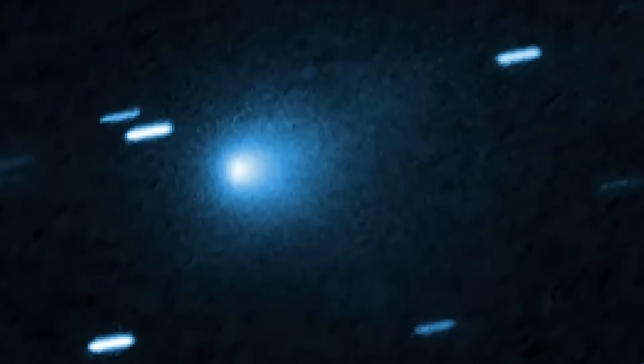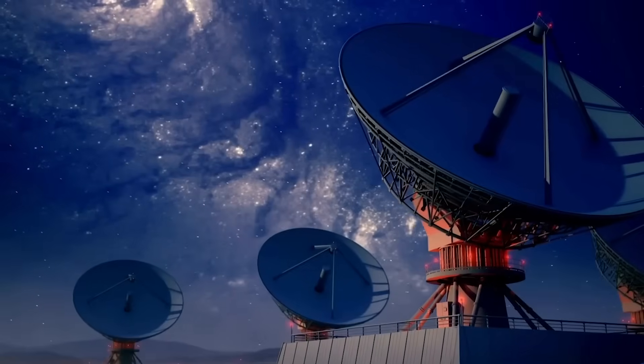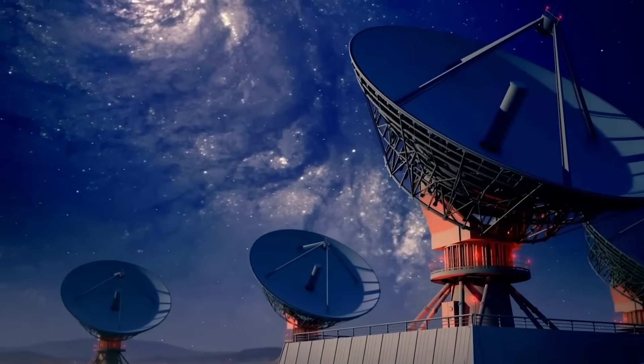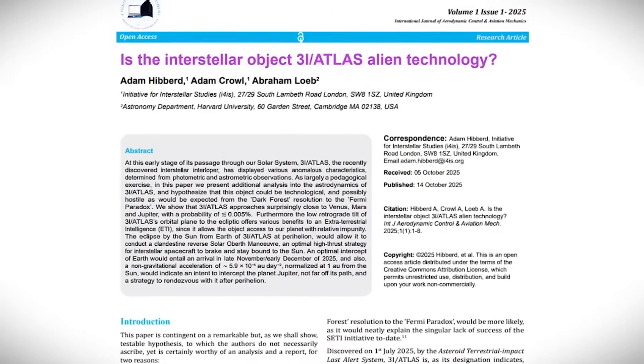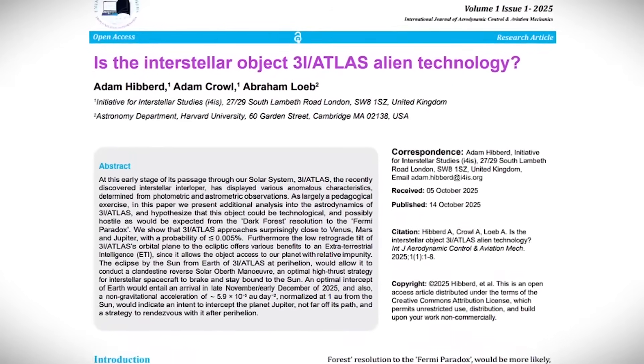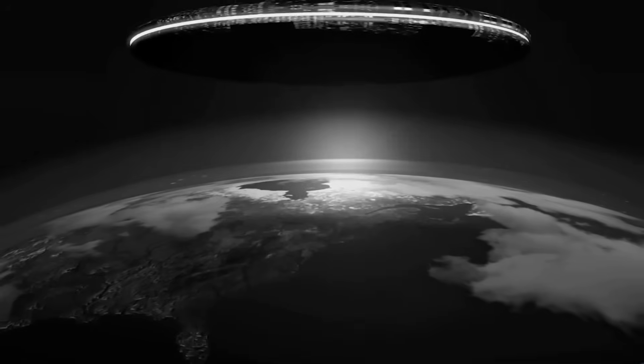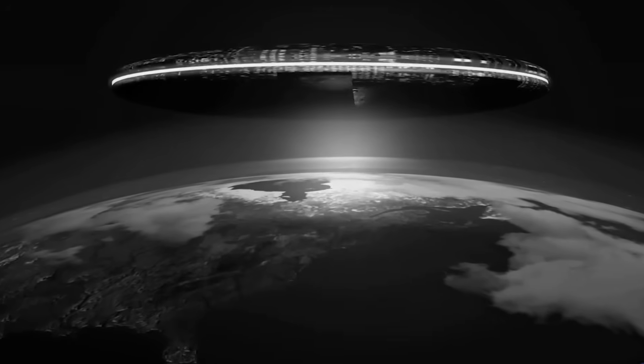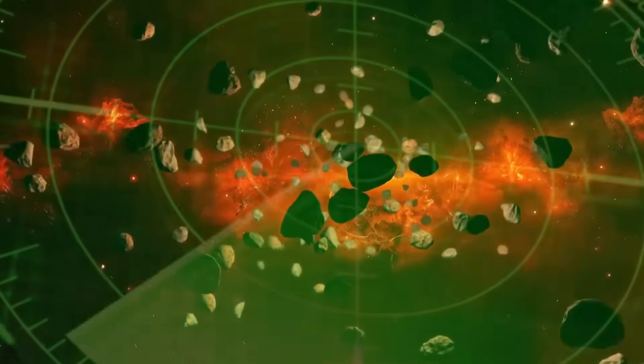They'll examine 3I/ATLAS's rotation, brightness, form, and material composition. Its origin, age, and chemical composition—icy, stony, or metallic—will be established. These findings help make 3I/ATLAS a cosmic detective story by exposing how other planetary systems develop.